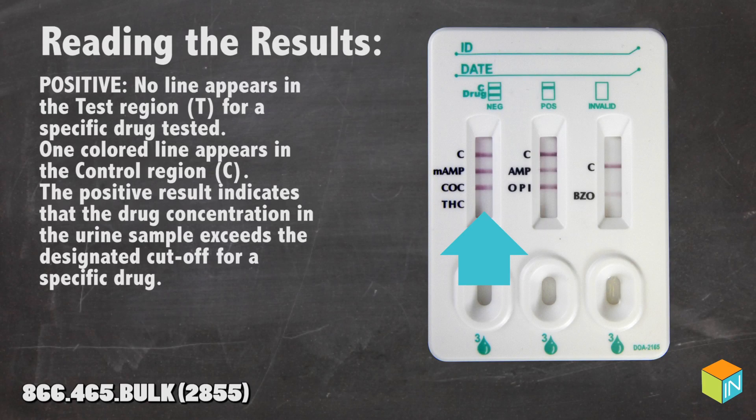Reading the Results - Positive: No line appears in the test region for a specific drug tested. One colored line appears in the control region. The positive result indicates that the drug concentration in the urine sample exceeds the designated cutoff for a specific drug.